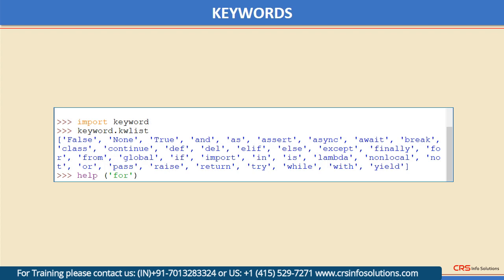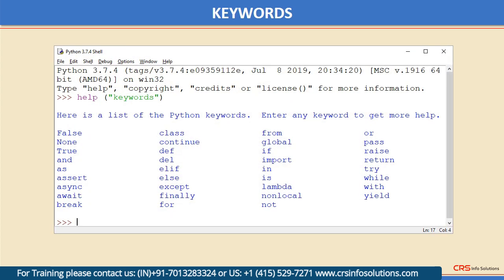Another way is to use Python shell's help system — just type help('keywords') and the list of keywords will be displayed. Further, you can obtain help about a certain keyword by putting it in parentheses in front of help, and the help regarding that keyword will be displayed.